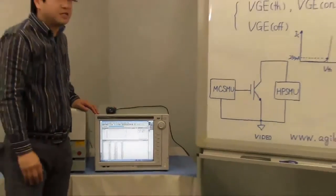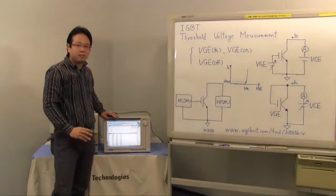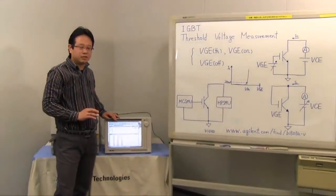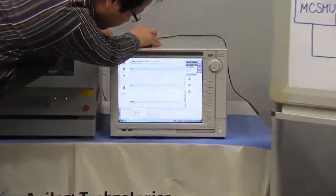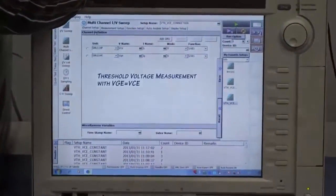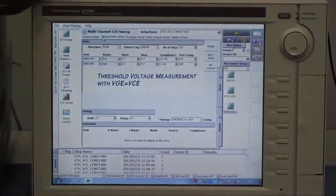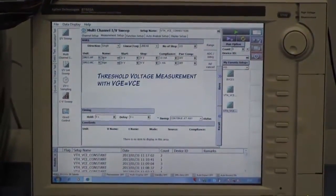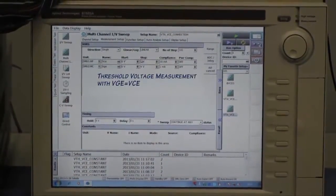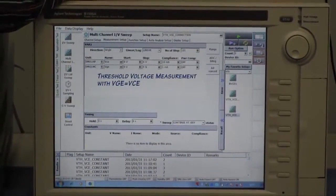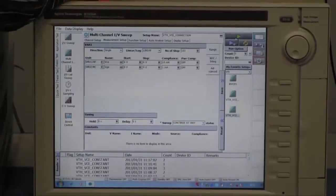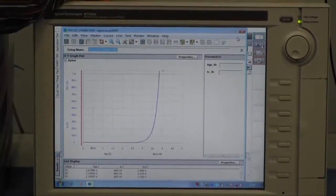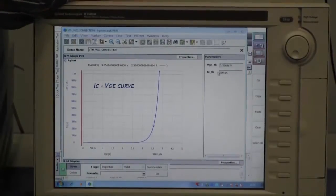Next I want to measure the threshold voltage with gate emitter voltage equal to collector emitter voltage. I recall the setup. Please see the measurement setup. VCE is swept from 0 to 4 voltage. It's equal to VGE. Compliance is 10 μA. I start the measurement. I can get the same VTH 3.5V at 250 μA.